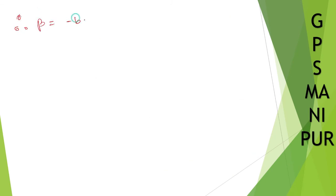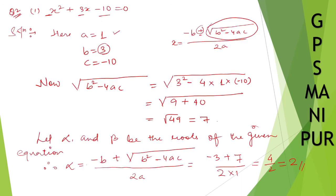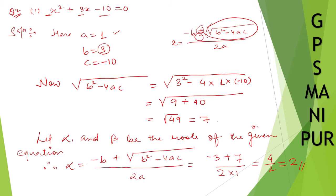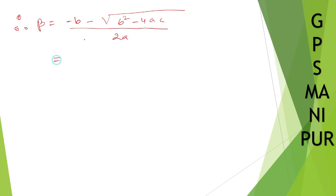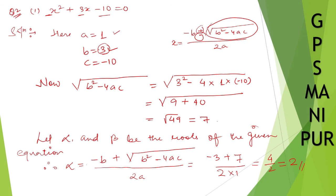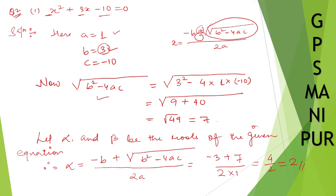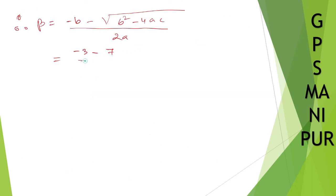Therefore beta will be equal to minus b minus root over b squared minus 4ac, divided by 2a. b is 3, so minus 3 minus 7 divided by 2 into 1. Minus 3 minus 7 is minus 10, divided by 2, which equals minus 5.